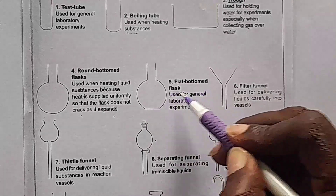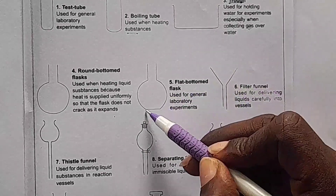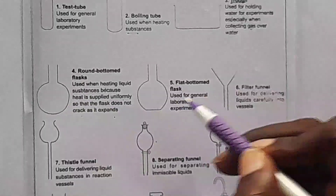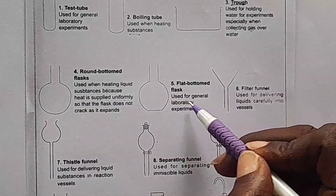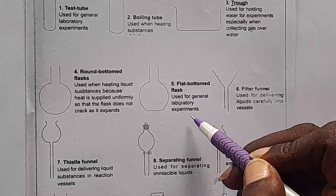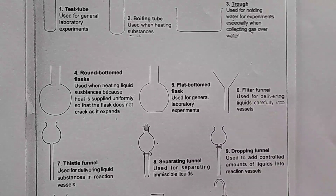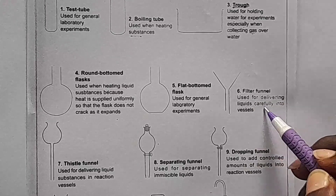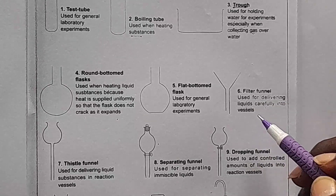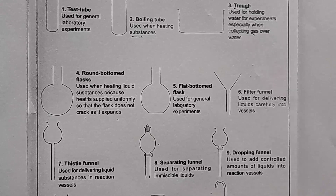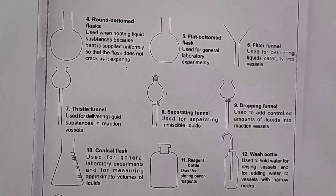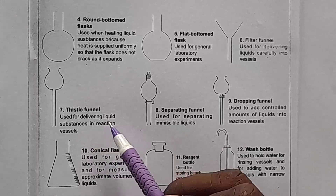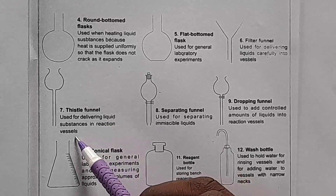Here we have a flat-bottom flask. The bottom is flat, while the previous one was round. The flat-bottom flask is used for general laboratory experiments. Next, we have a filter funnel. A filter funnel is used for delivering liquids carefully into vessels — that means reaction vessels. Number seven, we are having a thistle funnel. A thistle funnel is used for delivering liquid substances into a reaction vessel.